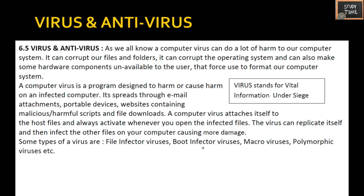Next is virus and antivirus. A computer virus can do a lot of harm to our computer system. It can corrupt our files and folders, corrupt the operating system, and make some hardware components unavailable to the user, forcing us to format the whole computer system. A computer virus is a program designed to harm an infected computer, just like a normal virus harms our physical body. It spreads through email attachments, portable devices like CD, DVD, pen drive, floppy disk, websites containing harmful scripts, and file downloads.